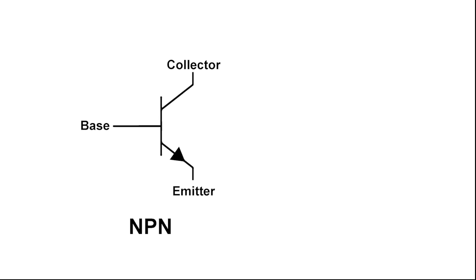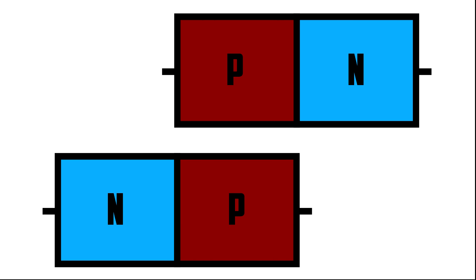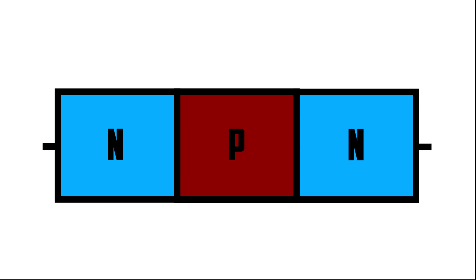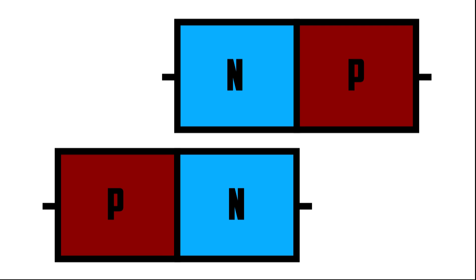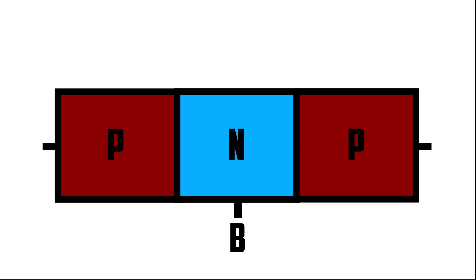The two main types are NPN and PNP transistors. NPN transistors have two N-type regions on either side of one P-type region, while PNP transistors have two P-type regions on either side of one N-type region. Bipolar transistors have three leads, one going to each region. Typically, the middle layer is the base.